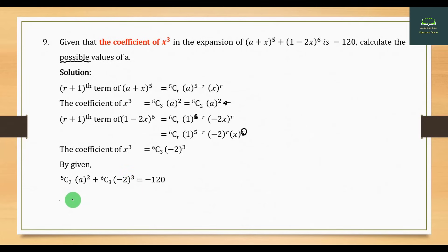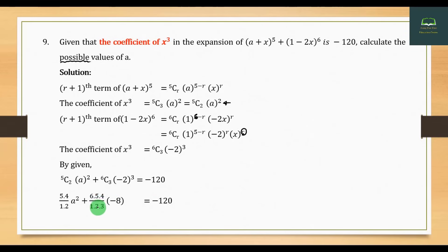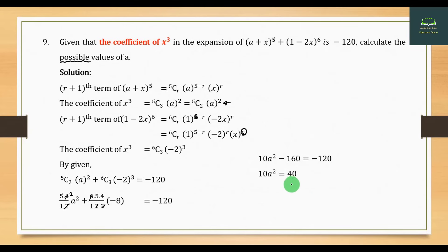The second step is 5, 4, 1, 2. Then 3, 3, 5, 4, 1, 2, 3 — all equal to minus 120. This gives x equal to 4, equal to plus or minus 3 — sorry, plus or minus 2. So we are back to zero.